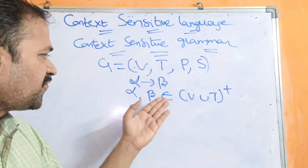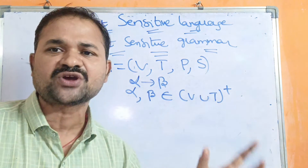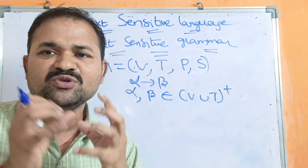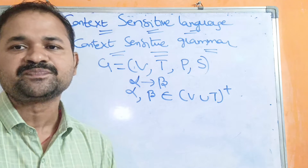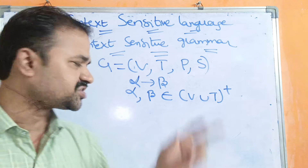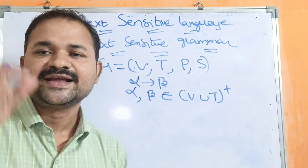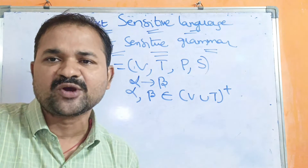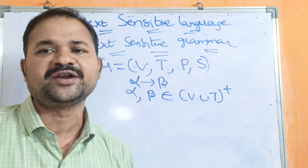So alpha and beta are combinations of variables and terminals, but we have written plus. We have two conditions: alpha, that means left hand side production, should contain minimum one non-terminal.